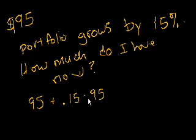That dot is just a times sign. It's not a decimal. It's a little higher than a decimal. So 95 plus 0.15 times 95 is what we have now, right? Because we started with $95, and then we made another 15% times what we started with. Hopefully that makes sense. Another way we say it, the $95 has grown by 15%.